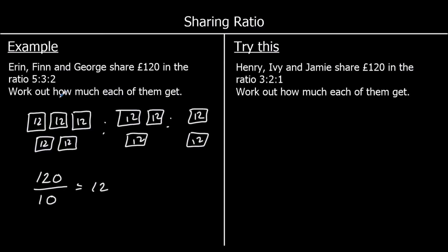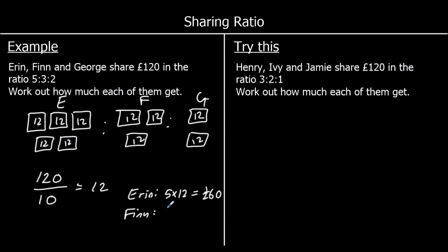So each box has got £12 in it, so I'm going to write 12 in every box. So Erin, Finn and George: Erin's got five twelves, which is £60. Finn has three twelves, which is £36. And George has two twelves, which is £24.